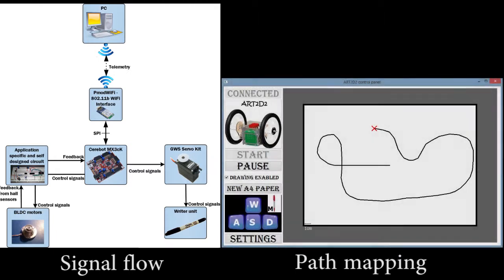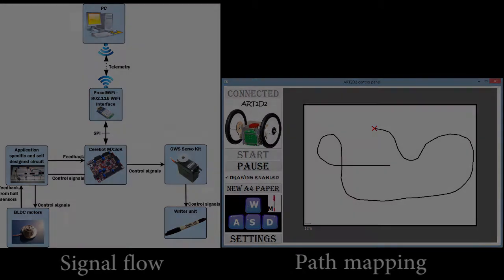From the received data, the Java program plots the route of the device and also the drawn curves. This way we can follow its movement without seeing it.